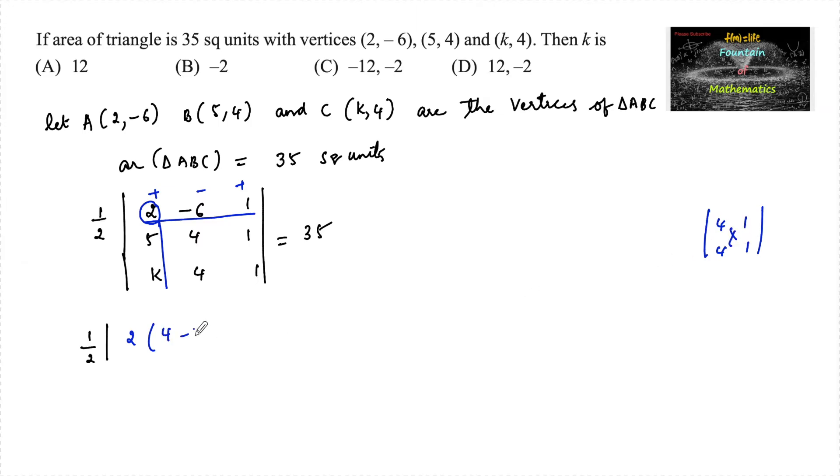And now minus 6 times, deleting this row and column, so we have 5, 1, k, 1. So we have 5 into 1 is 5 minus k into 1 is k.